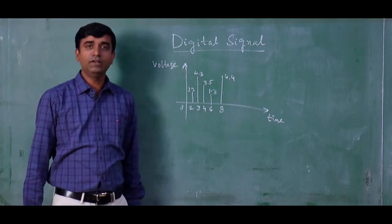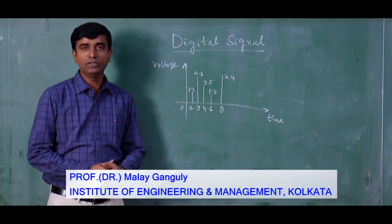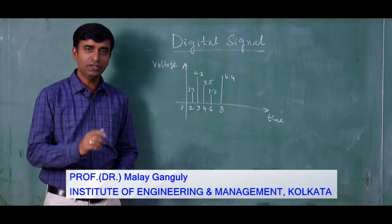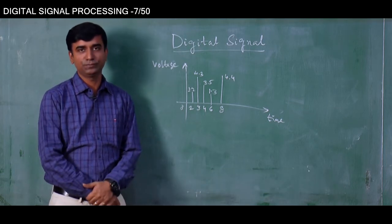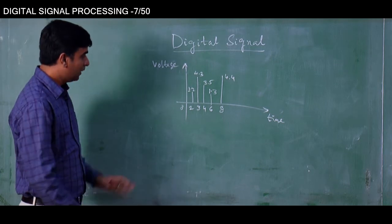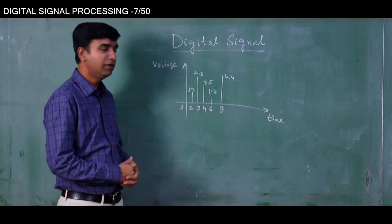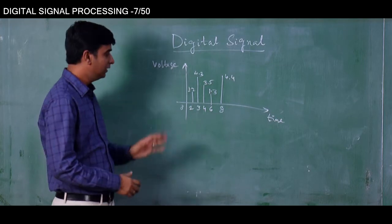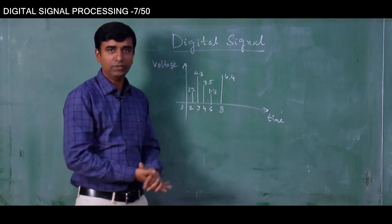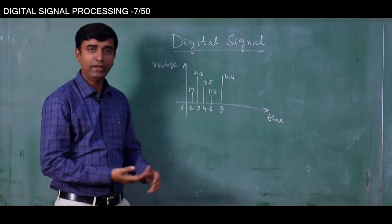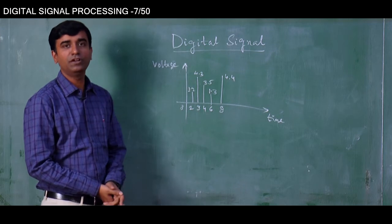In this lecture we will try to understand the types of digital signals, especially we will focus on binary signals that is used the most. This is a digital signal that we have already discussed in previous lectures. It has got values at discrete instances of time. A digital signal by definition is a discrete time, discrete value signal.